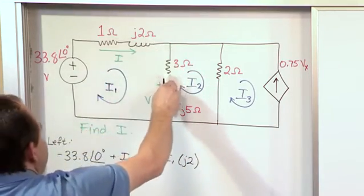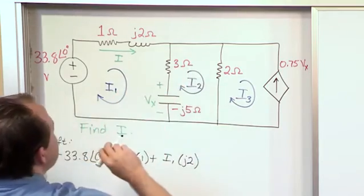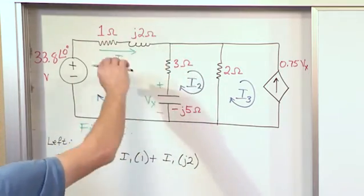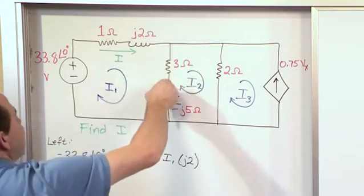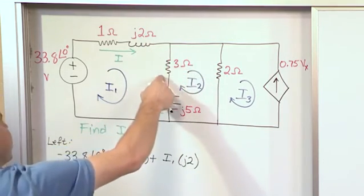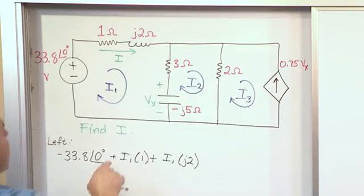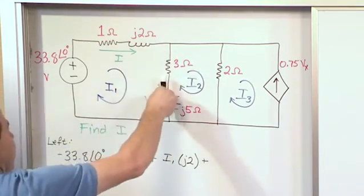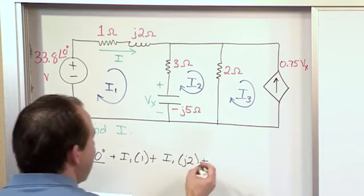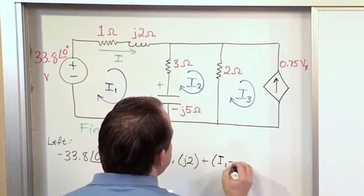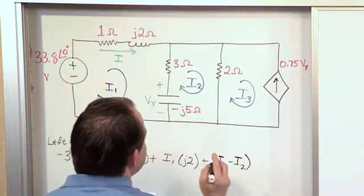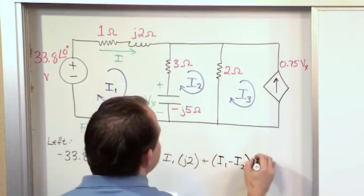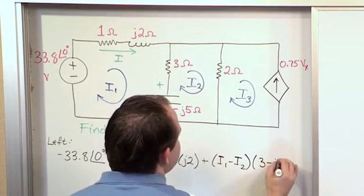Now we get down to the shared branch, shared between I 1 and I 2. Since we're walking this direction, we're going to assume the current through this is going this way, so that we can write our voltage drops in the normal sense. So it's going to be I 1 minus I 2. I 1 is going this way. I 2 is fighting it in the opposite direction. So what we'll have is I 1 minus I 2, which is fighting it, times this impedance here, which is 3 minus J 5.